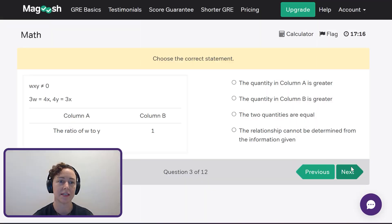We've got another quantitative comparison. In this one, W, X, and Y cannot equal zero. So none of those values can be zero. Then I'm given three W equals four X and four Y equals three X. In column A, I'm looking for the ratio of W to Y. And in column B, I'm comparing that to one. So I'm going to do a little bit of work on this one. First of all, I've got that three W equals four X and four Y equals three X. So I'm going to rearrange that first value and I'm going to say, okay, well, I want to isolate the X. So then I'm going to divide both sides by four. So now I've got three W over four equals X.